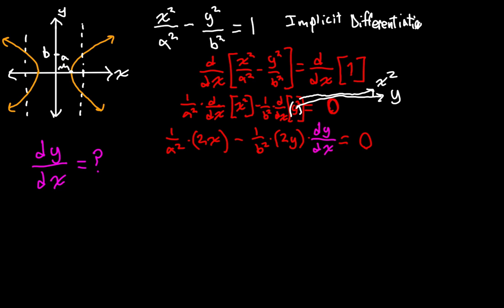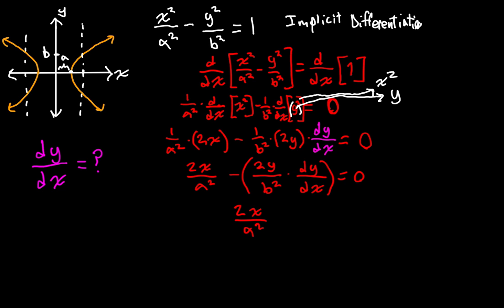Now let's simplify. We have 2x over a squared minus 2y over b squared times dy/dx, and that equals zero. I'm going to add this second part to both sides, so we end up with it on the right side. So we get that 2x over a squared is equal to 2y over b squared times dy/dx.